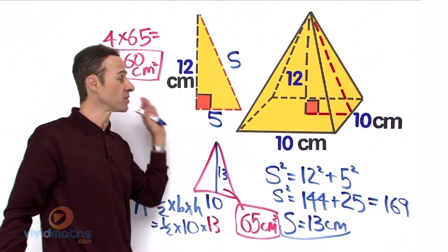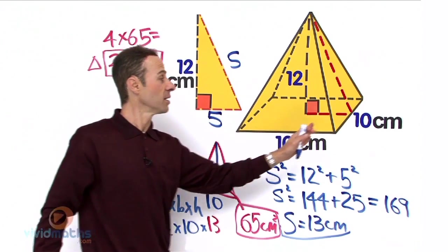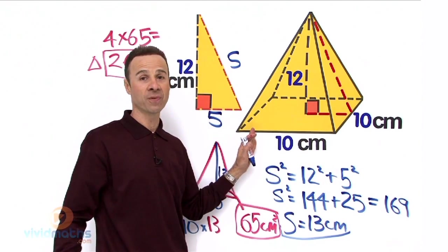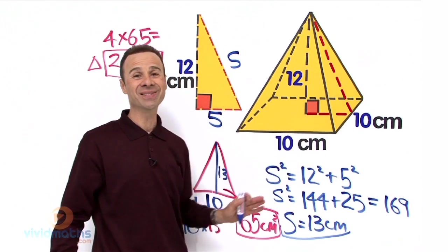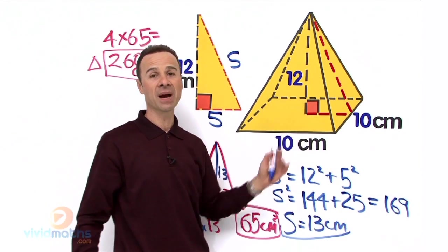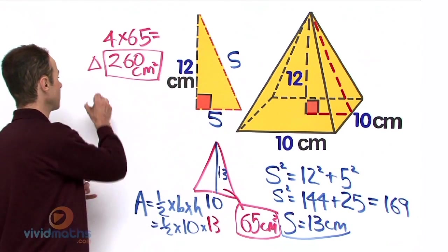Now all we need to do is add the square base down the bottom right here. That is 10 cm by 10. It is a perfect square, so 10 times 10 is 100. That is the area of the base of the pyramid—that is going to be 100.